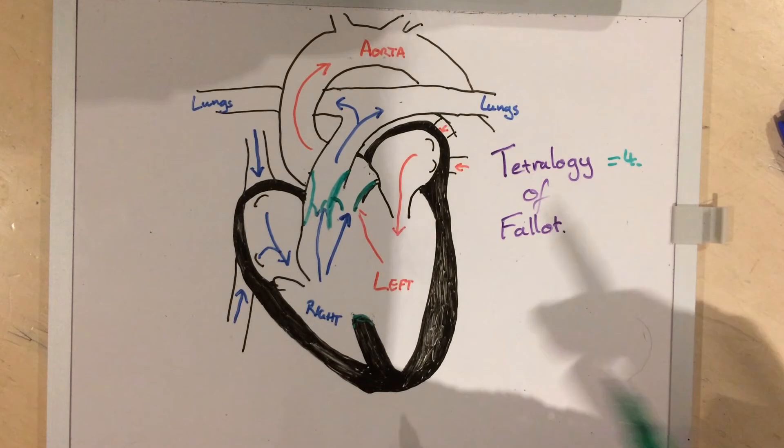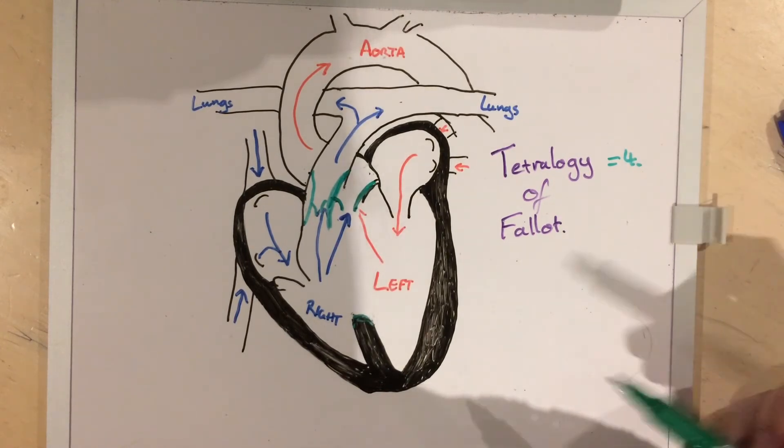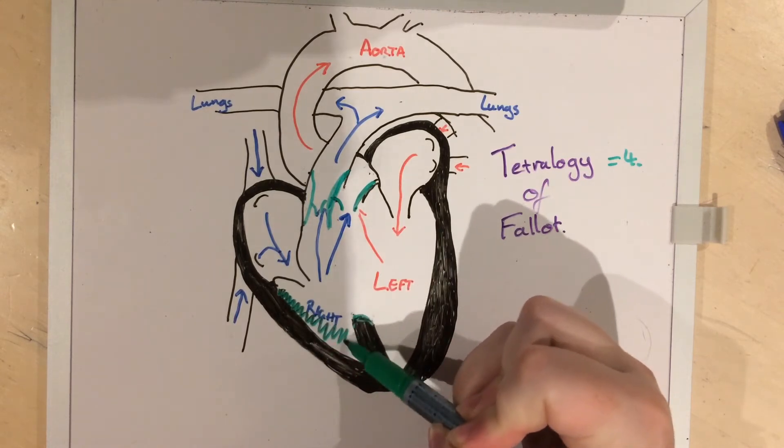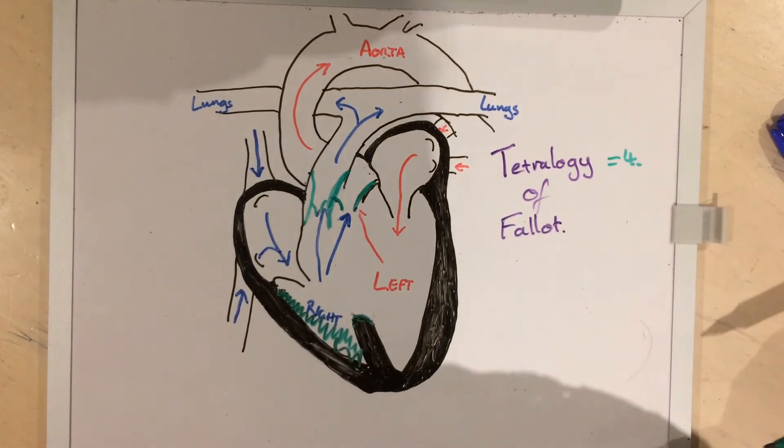And lastly, because this heart is all so weird and wrong, the right side of the heart muscle gets bigger and bigger so that it can push against the much stronger left side of the heart. So you also have right ventricular hypertrophy.